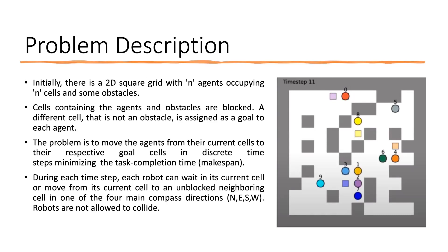We have certain constraints to these problems. During each time step, each robot can either wait in place or move to its neighboring cell. There are four main movement directions: north, east, west, and south. The robots are not allowed to collide. A robot is determined to collide when it moves into a cell occupied by another robot, and also both robots cannot move into each other's cells simultaneously.